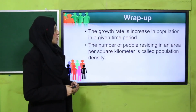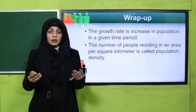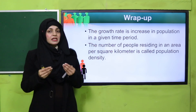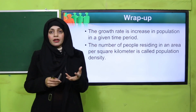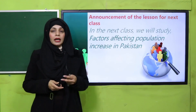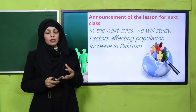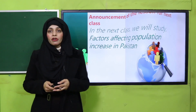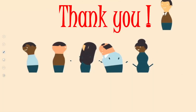The growth rate is the increase in population with the increase in time, whereas the number of people residing per square kilometer of area is known as the population density. In the next lecture, we will discuss the factors affecting population in Pakistan. I hope you have enjoyed today's lecture. Keep everybody around you safe. Have a good day. Thank you so much and Allah Hafiz.